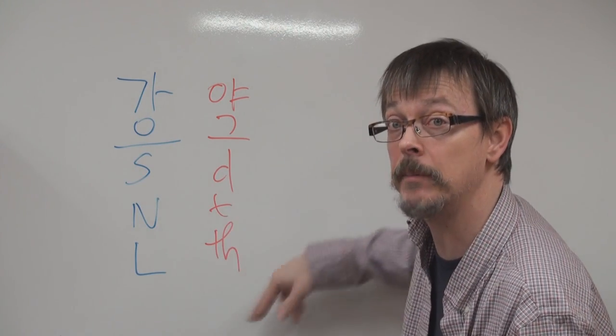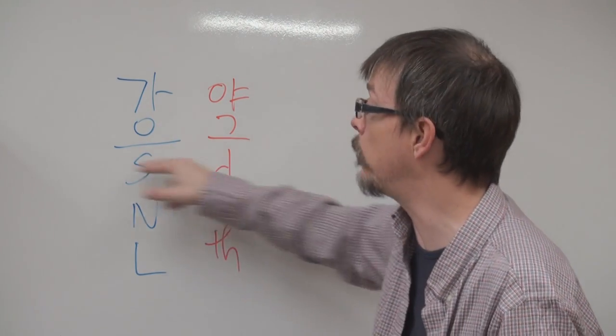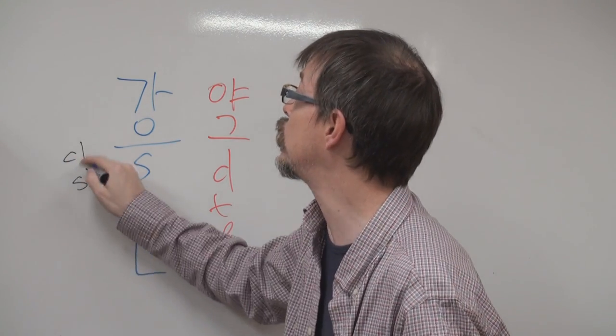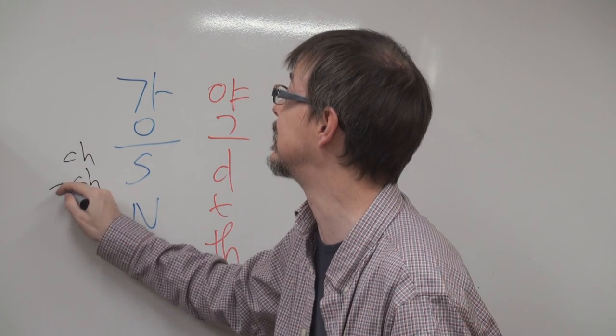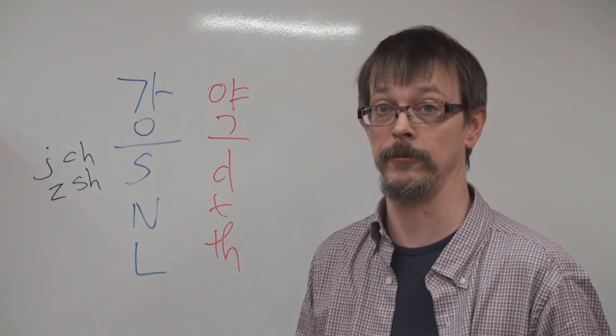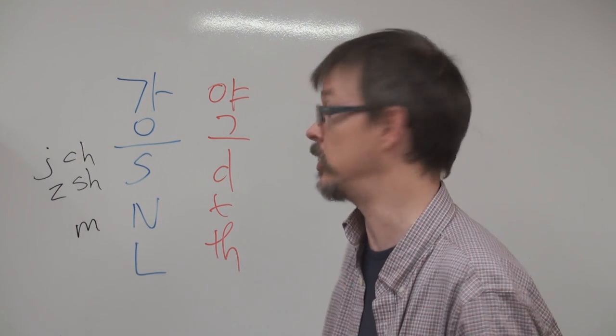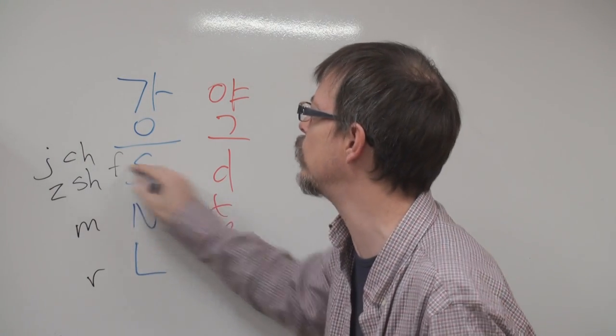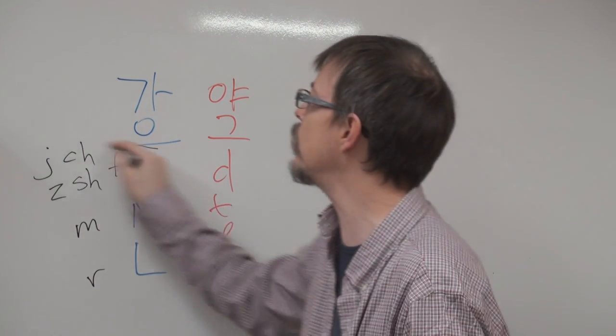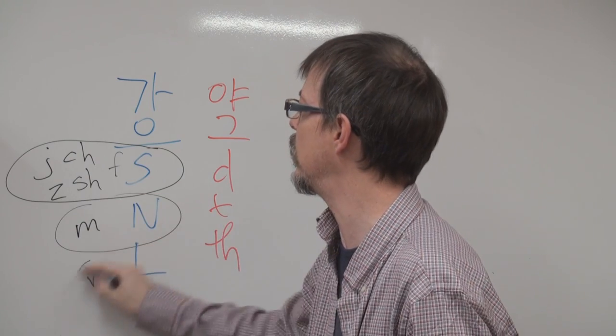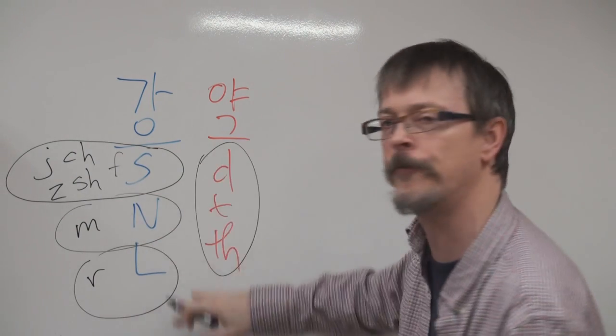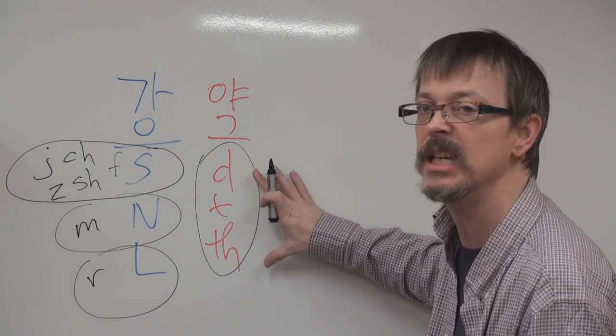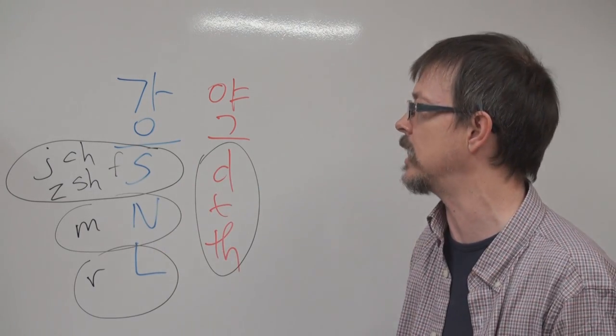So these are the strong sounds, and these are the weak sounds. So we have four families, the S family, the N family, the L family, and the D family. These are the weak sounds, these are the strong sounds.